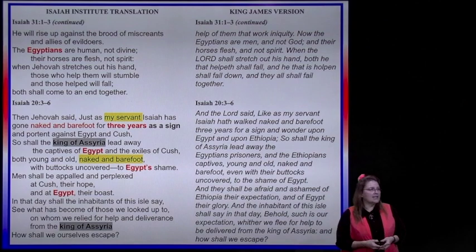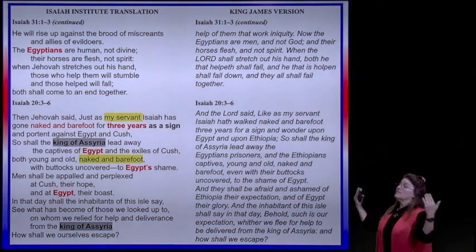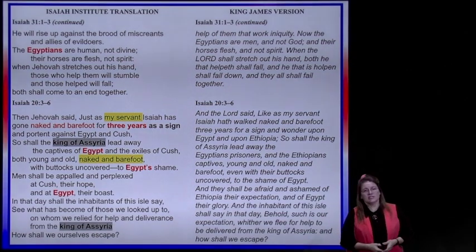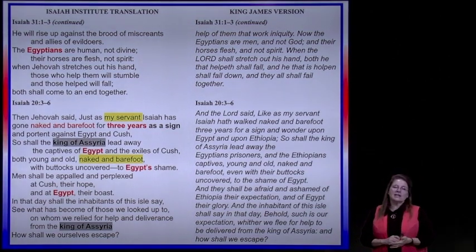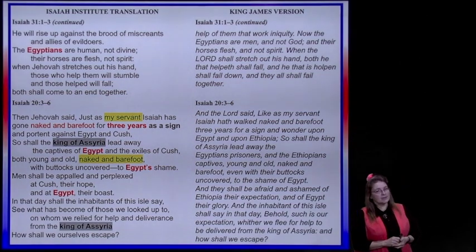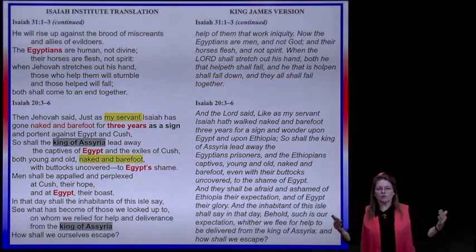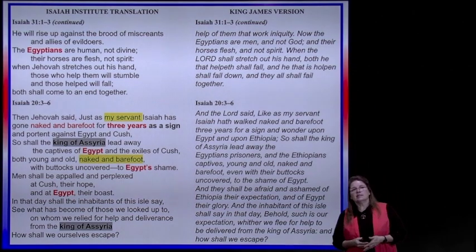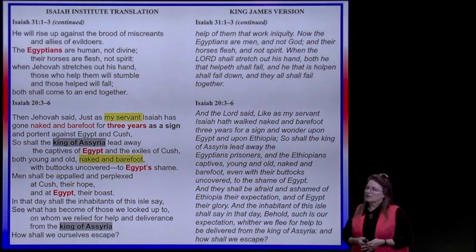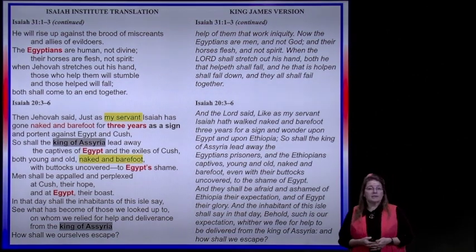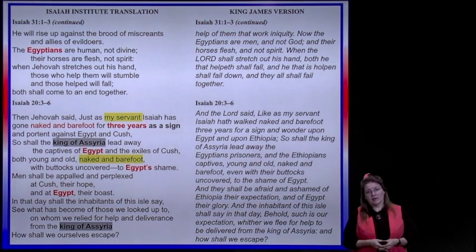In Isaiah 20—chapters 19 and 20 go together as chapters on Egypt—then Jehovah said: 'Just as my servant Isaiah has gone naked and barefoot for three years as a sign and a portent against Egypt and Cush, so shall the king of Assyria lead away the captives of Egypt and the exiles of Cush, both young and old, naked and barefoot.' It's a very common thing in Hebrew prophecy for the prophet to act out what would happen. Isaiah was naked and barefoot prophesying for three years as a sign that Assyria was going to come and destroy.